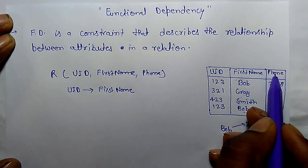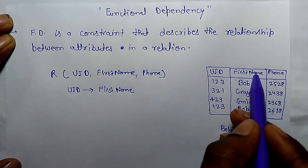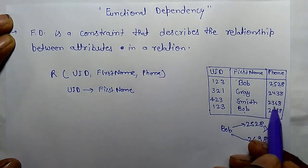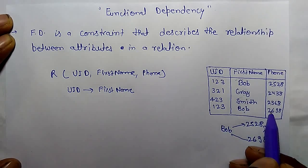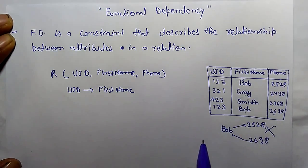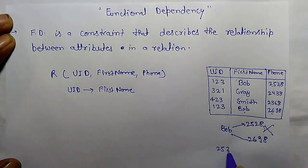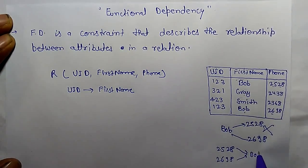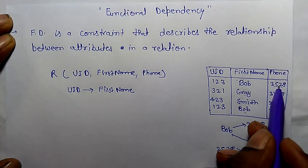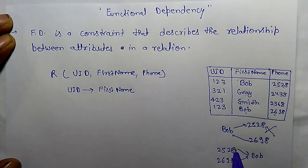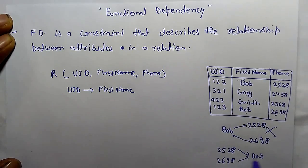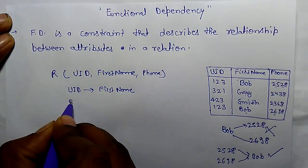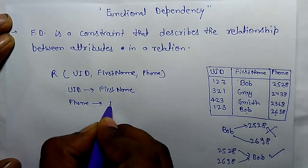Let's check its reverse — whether phone number uniquely determines first name. 2528 determines Bob, 2438 Gray, 2368 Smith, and 2698 again Bob. So 2528 and 2698 both functionally determine Bob, but they do not have more than one name. So this type of relation is allowed in functional dependency. So in this relation, phone functionally determines first name.